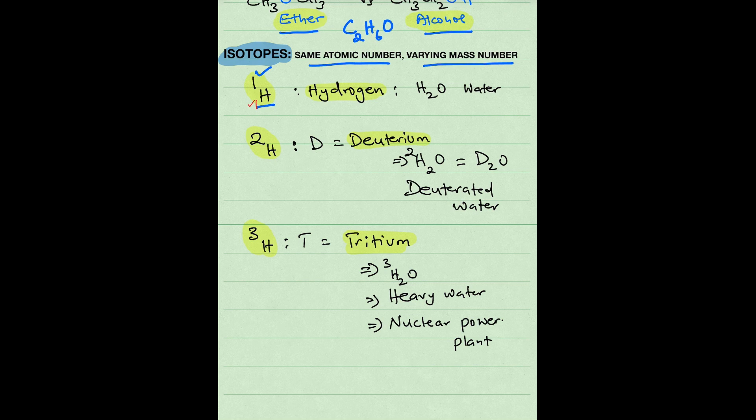So when you take proton plus neutron, you get a mass number. So mass number equals proton plus neutron. So in this case, it's 1 plus 0 which gives you 1. And a common compound with hydrogen is water where the mass of this hydrogen is 1 and the formula is H2O.